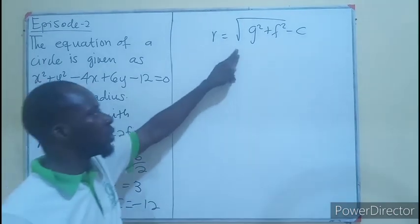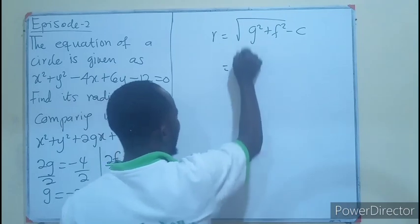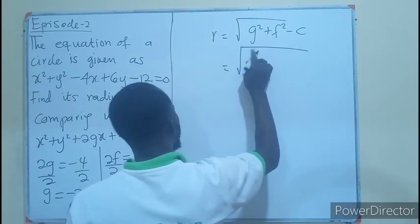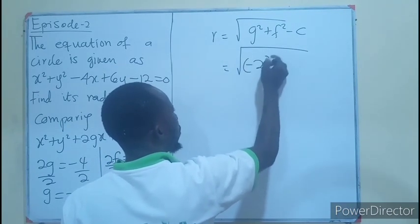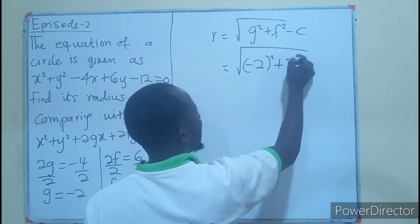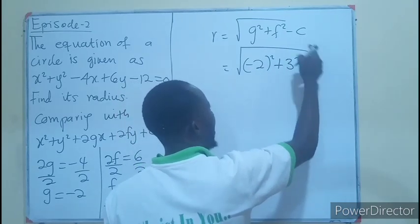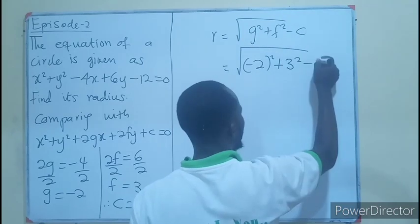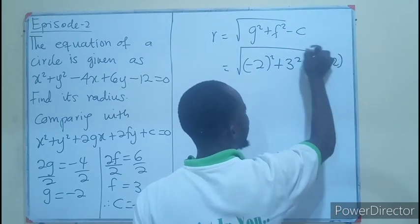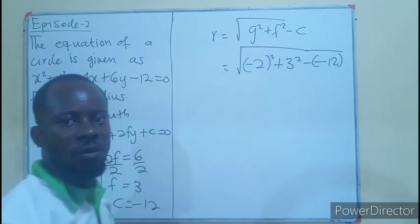By substitution, the radius is then going to be negative 2 all squared plus 3 squared minus c. And c is minus 12, so minus minus 12.